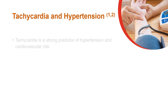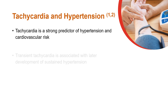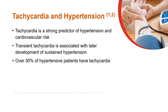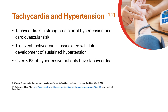Tachycardia and hypertension — what is the relation? Tachycardia can be caused by various heart rhythm disorders and is considered a strong predictor of hypertension and cardiovascular risk. Several studies have suggested that transient tachycardia is associated with the later development of sustained hypertension. Over 30 percent of hypertensive patients have tachycardia.